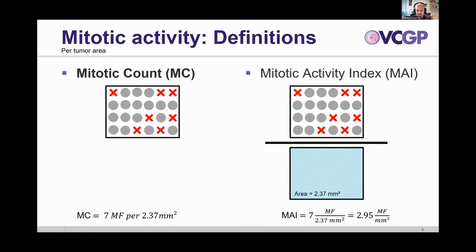These are pretty similar, but we use the mitotic count routinely and the cutoffs are calculated for this. There is an opportunity to use the mitotic activity index for cases such as when your tumor size is too small or for other applications.